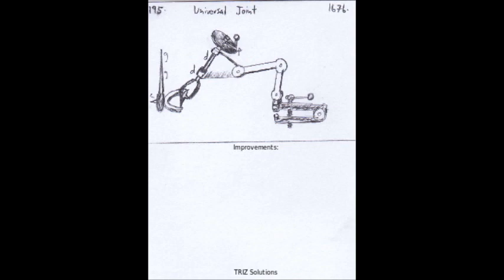However, there is always room for further improvements in terms of durability, efficiency, and ease of maintenance. One area of improvement for the universal joint could be in the materials used for its construction.